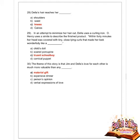Next question: in attempts to minimize her haircut, Della uses curling irons. O. Henry uses a simile to describe the finished product: within 40 minutes her head was covered with tiny curls that made her look wonderfully like what? Options are a child's dog, scared, tron schoolboy, and comical puppets. Option C is correct — tron schoolboy.